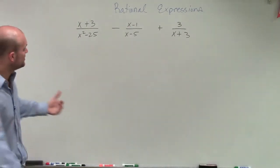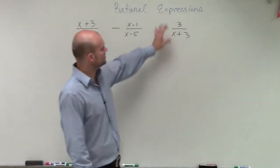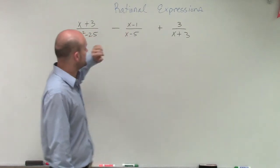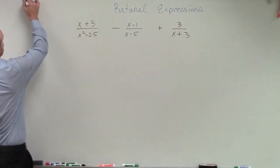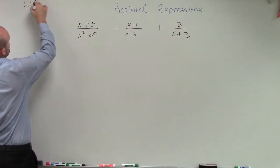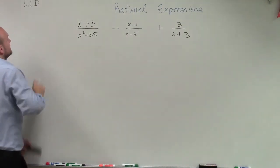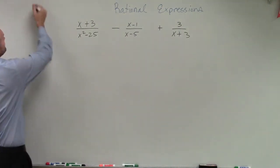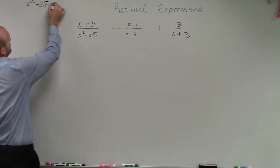But when doing that, we always want to make sure we simplify each rational expression first. So you see that this cannot be simplified, and this cannot be simplified. But this one we can simplify. So before doing the LCD, let's go and simplify x squared minus 25.